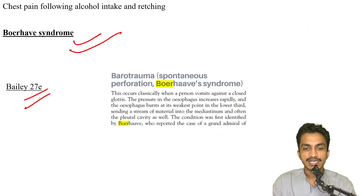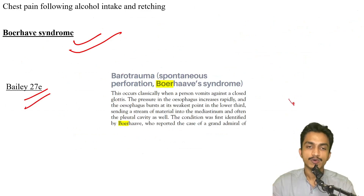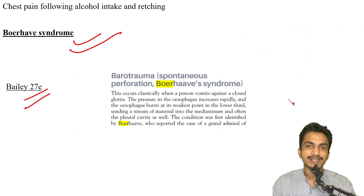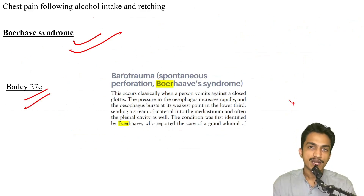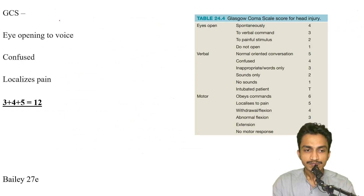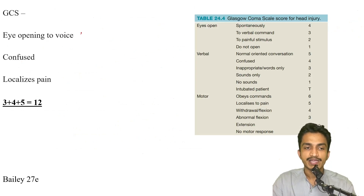Patient with chest pain following alcohol intake and retching — this points straight to Boerhaave syndrome, taken from Bailey. If a patient vomits against a closed glottis, pressure increases and the esophagus bursts at its weakest point. Chest pain following alcohol intake and retching or vomiting against a closed glottis is straightforward for Boerhaave syndrome.